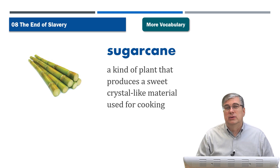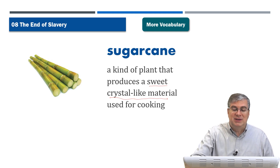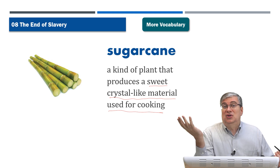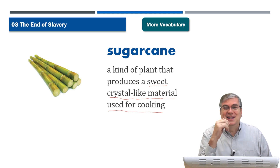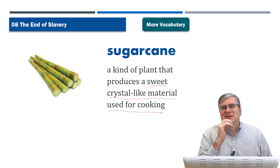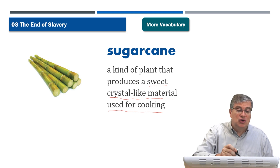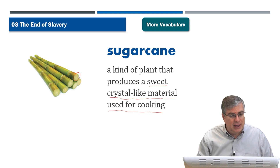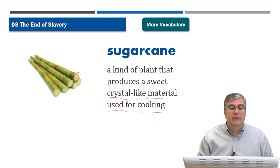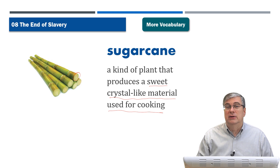Sugar cane was also another very important crop. It's a kind of plant that produces sweet crystal-like material used for cooking — that's sugar. Many foods have sugar added, and the sugar comes from sugar cane. These plants look like bamboo, but they can be dried and processed to make sugar. Sugar was another very important crop like cotton, grown in southern states and also in many small islands in the Caribbean.